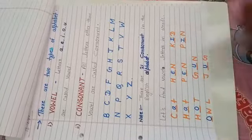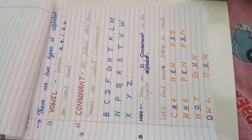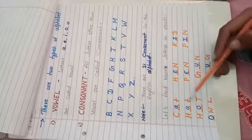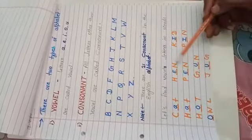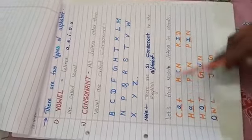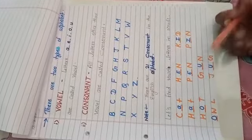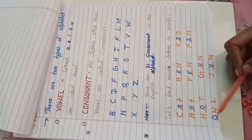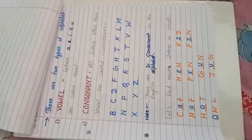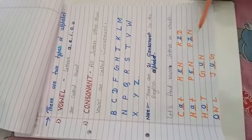Here are some words which I have indicated. This is cat, hat, hot, owl, hand, pen, gun, jug, kid, and pin. You can see with blue marker here the vowel letters, which indicate vowel sound.